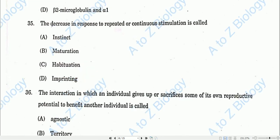Question number thirty-five: The decrease in response to repeated or continuous stimulation is called habituation. Option C will be the correct one — it is a direct and straightforward question.